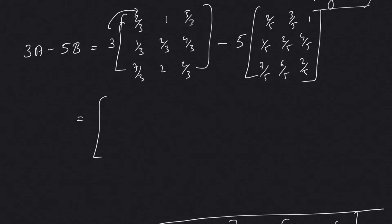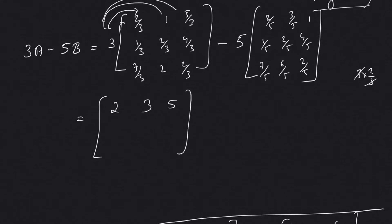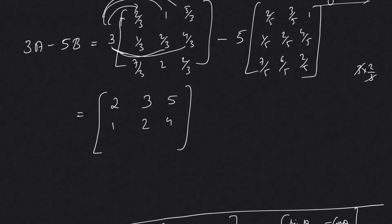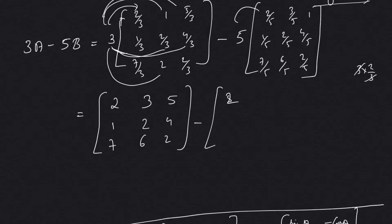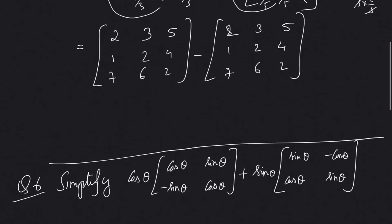So 3 × 2/3: the 3s cancel, giving 2. Then 3 × 1 = 3, 3 × 5/3 = 5, 3 × 1/3 = 1, 3 × 2/3 = 2, 3 × 4/3 = 4, 3 × 7/3 = 7, 3 × 2 = 6. For the second matrix: 5 × 2/5 = 2, 5 × 1 = 5, 5 × 7/5 = 7, 5 × 6/5 = 6, 5 × 2/5 = 2.